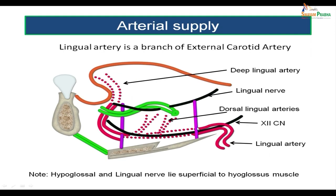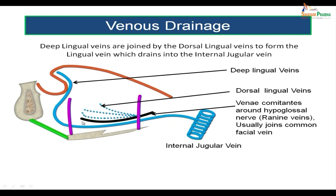To summarize the vascular supply: arterial supply is by the lingual artery from the external carotid artery, giving dorsal lingual arteries and terminating as the deep lingual artery. For venous drainage, deep lingual veins and dorsal lingual veins unite to form the lingual vein draining into the internal jugular vein. Additionally, venae comitantes around the hypoglossal nerve usually join the common facial vein but can occasionally join the lingual vein.